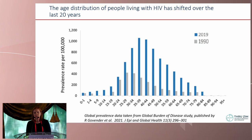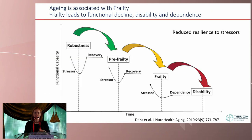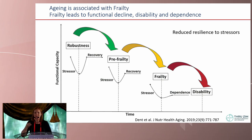The reason for looking at frailty is because we know that the population distribution for people living with HIV has shifted over the last 20 years. The population is now much older, and looking to the future, the population pyramid is predicted to change further. We know that aging is associated with frailty — this concept of moving from being robust to pre-frail to frail and then disabled, characterized by a reduced resilience to a stressor. For example, pneumonia or some intercurrent infection — the recovery is delayed and one never quite gets back to where they were before.